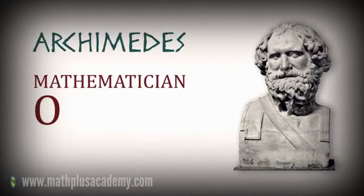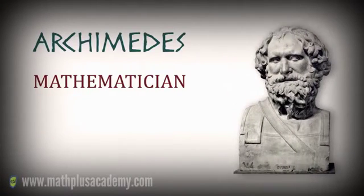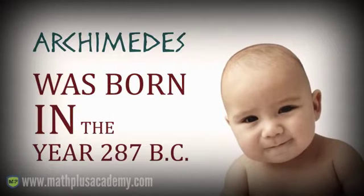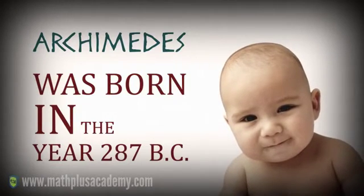We're going to kick off our first mathematician of the month with Archimedes. Archimedes was born sometime around the year 287 BC and died around 212 BC, so he lived to be about 75 years old.